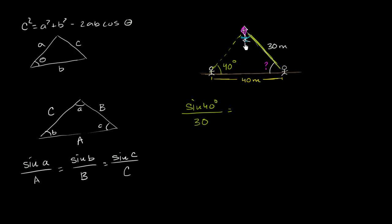So let's say that this angle right over here is theta. We know this distance right over here is 40 meters. So we could say that the sine of theta over 40, this ratio is going to be the same as the sine of 40 over 30. And now we can just solve for theta. Multiplying both sides times 40, you're going to get, let's see, 40 divided by 30 is 4 thirds sine of 40 degrees is equal to sine of theta.